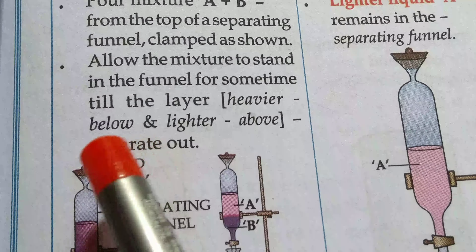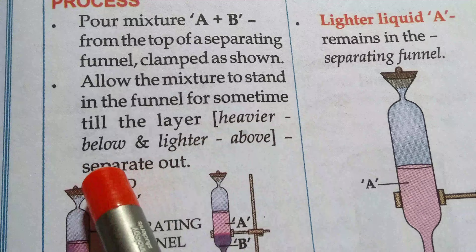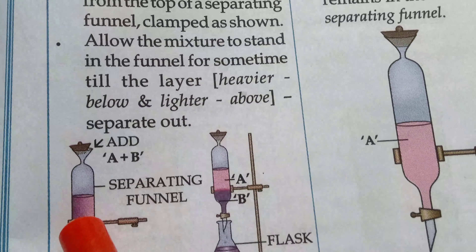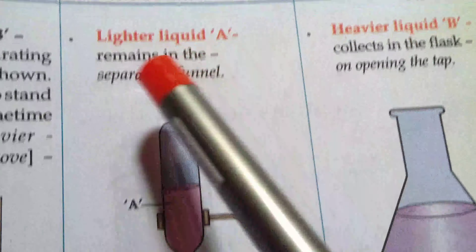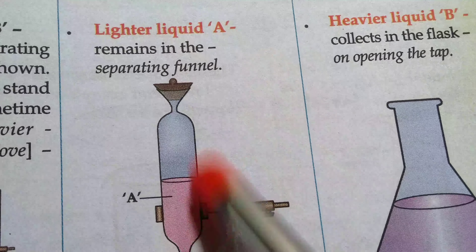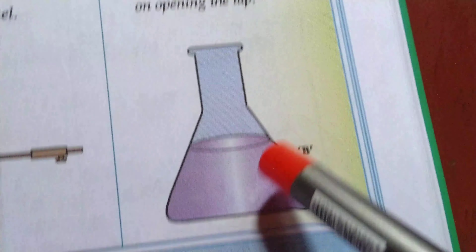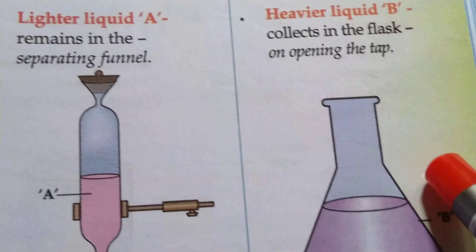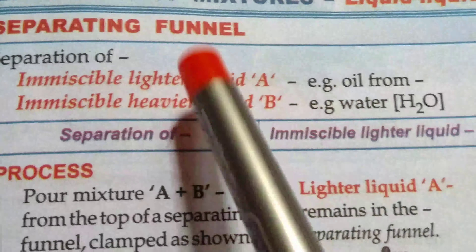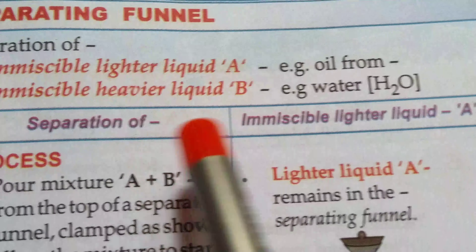Allow the mixture to stand without any disturbance till the heavier layer settles below and the lighter layer rises above. Lighter liquid remains in the separating funnel, while the heavier liquid is collected in the flask on opening of the tap. Basically, a separating funnel is used to separate any immiscible lighter liquid from the immiscible heavier liquid.